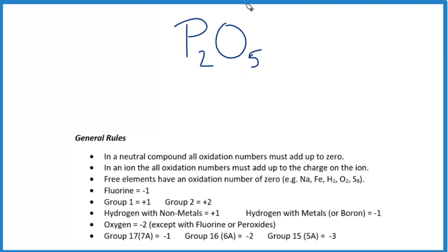When we find the oxidation numbers, this is a neutral compound because there's no negative or positive charge. So for a neutral compound, all the oxidation numbers add up to zero. That's helpful.